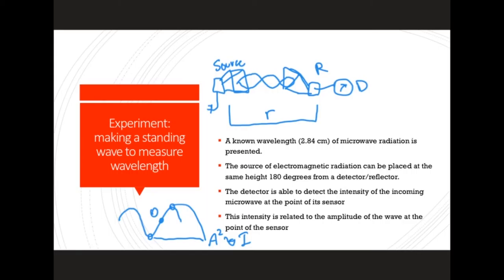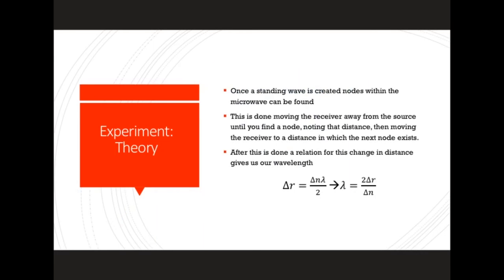We are given a source which emits 2.84 centimeter wavelengths of microwave radiation. Our goal in this experiment is to either reject or confirm the given wavelength of this radiation. Now that we have our standing wave created, we can adjust the distance between the receiver and the emitter such that we go from one node to another. This delta r relationship comes from earlier when we were talking about the relationship between distance, wavelength, and the number of nodes.